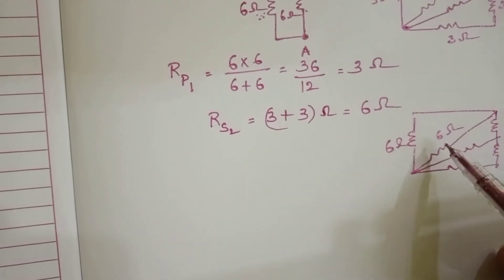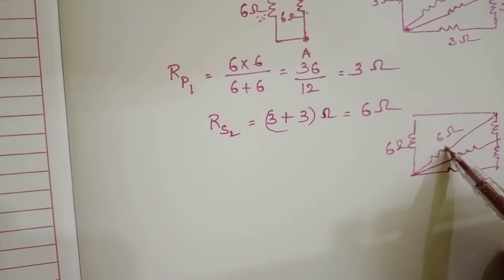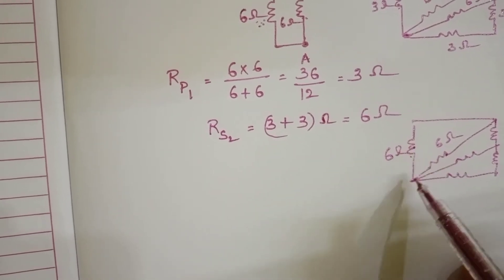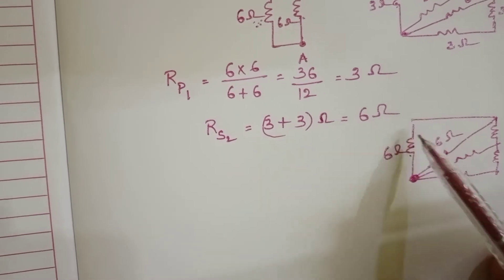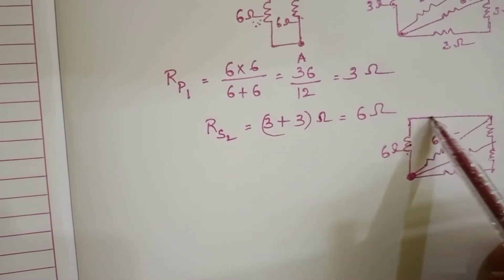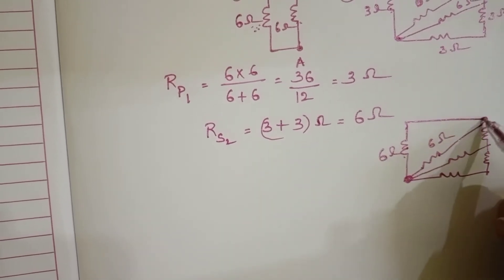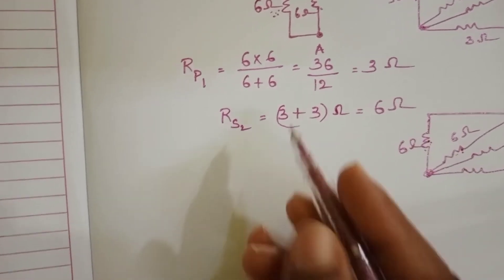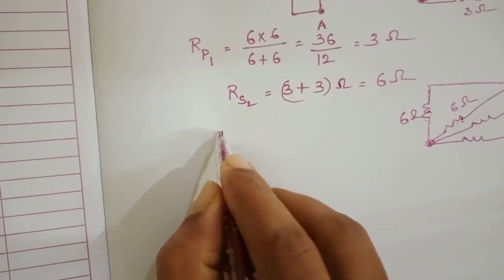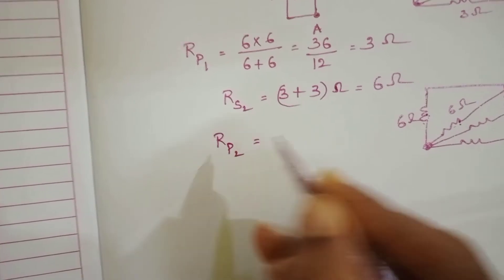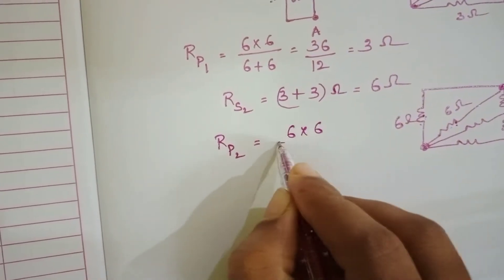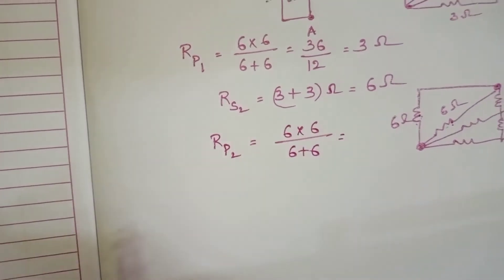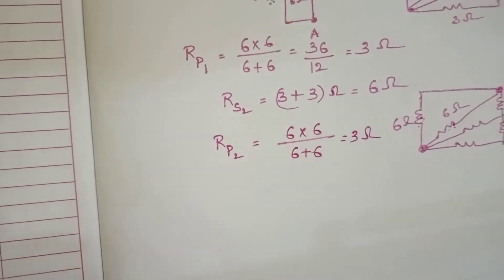Now once observe here — this 6 ohm resistor and 6 ohm resistor. These two terminals are at one point and the next two terminals are also at the same point. This connection is a parallel connection.